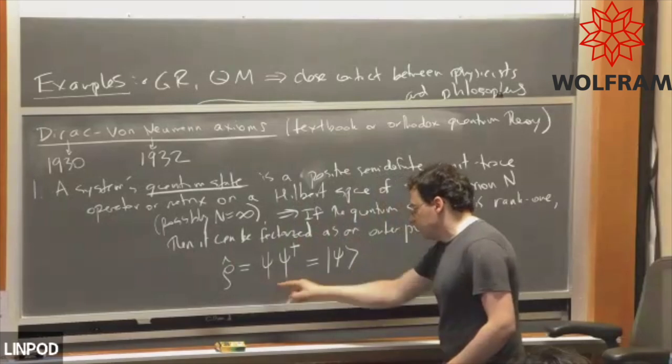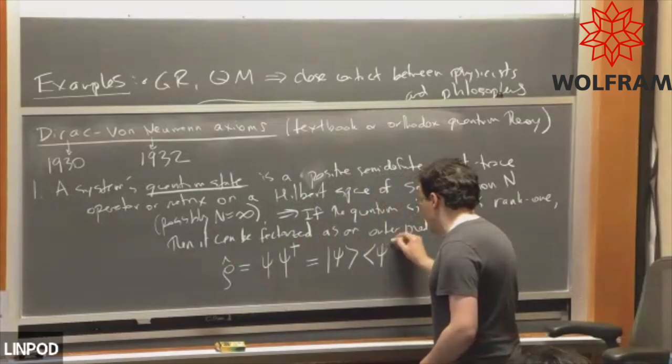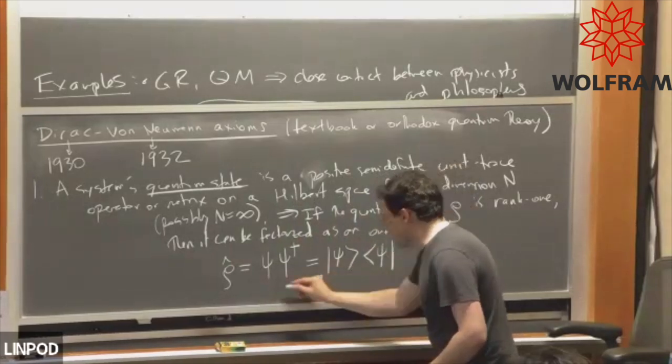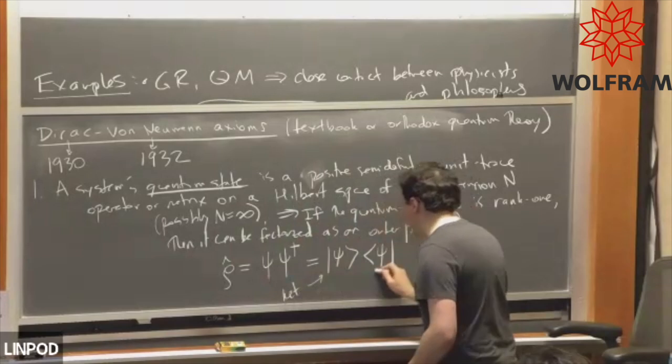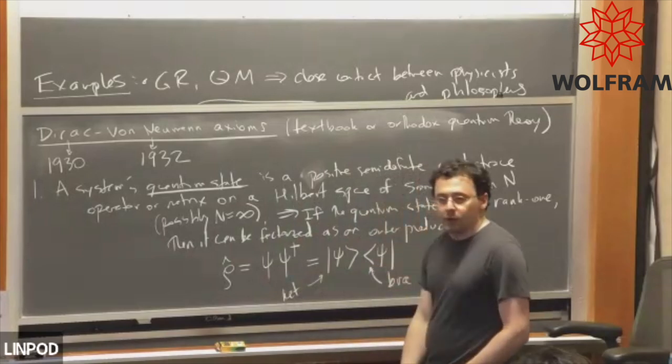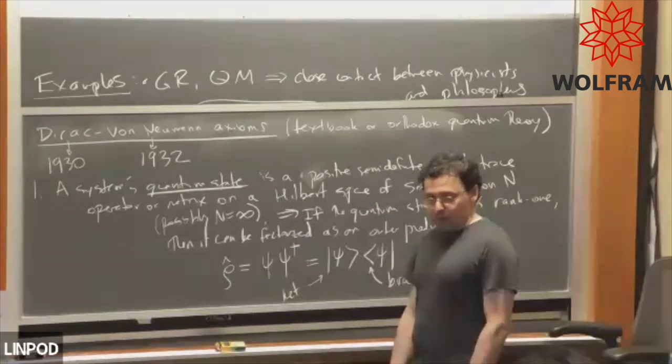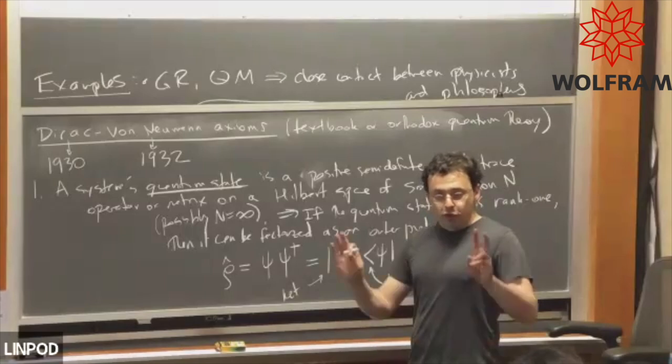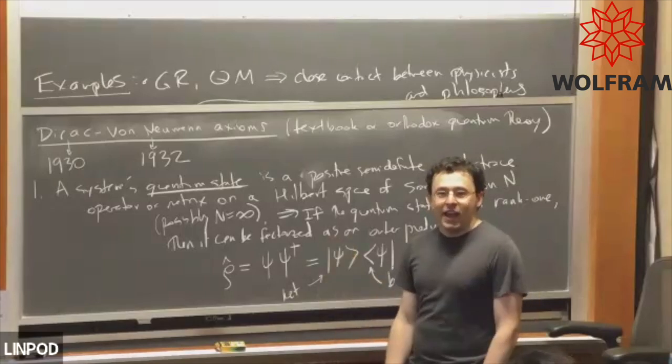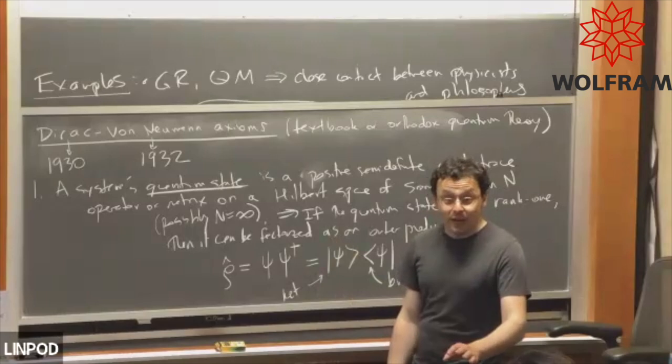Where this funny frame symbol is called a ket and this funny frame symbol is called a bra. I wonder why he used these funny words? Because he put them together the other way they make a bracket. Apparently, according to The Strangest Man, a biography of Paul Dirac written by Graham Farmelo—I highly recommend everything he's written, he's fantastic, his books are amazing.